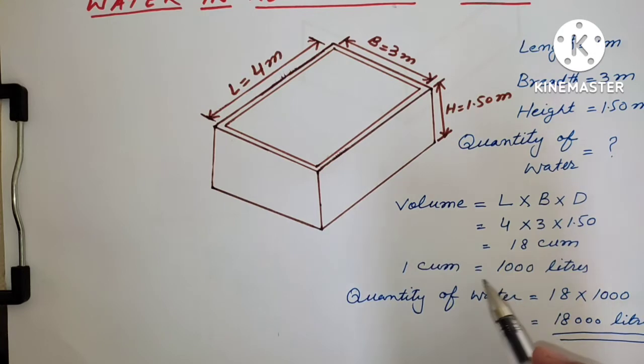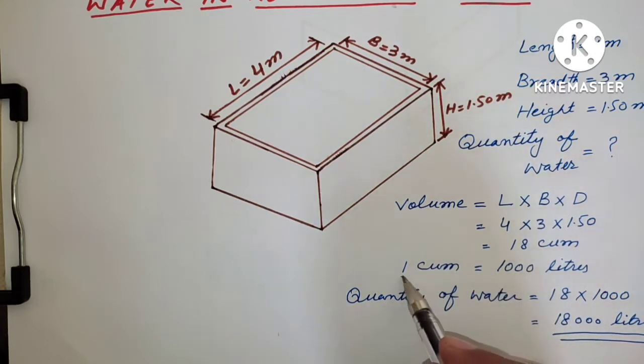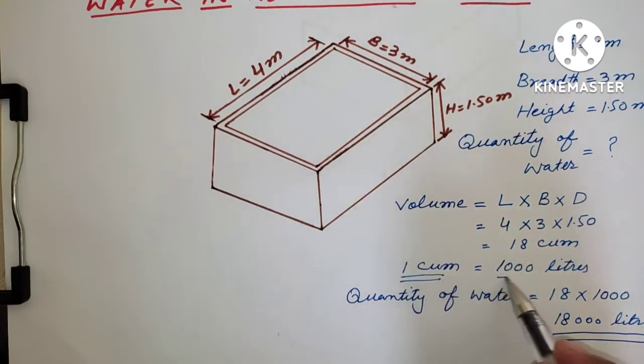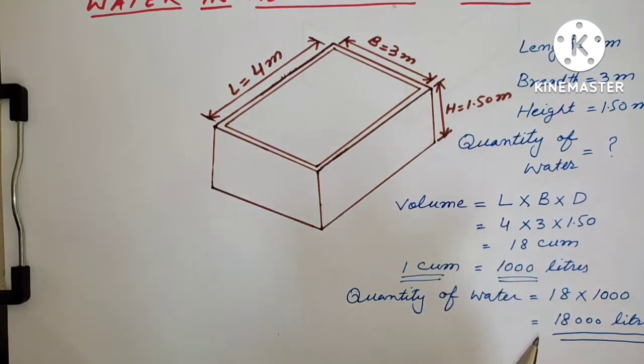This is the main formula we have to remember: 1 cubic meter is equal to 1,000 liters.